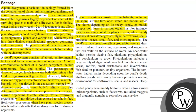The pond surface provides excellent ground for water striders, marsh traders, free-floating organisms, and organisms that can move on the surface of water. An upper water habitat permits sizable fish, plankton, phytoplankton and zooplankton to grow. Phytoplankton includes a large variety of algae, while zooplankton refers to insects, larvae, rotifers, small crustaceans and invertebrates. Fish feed on plankton or tiny organisms.